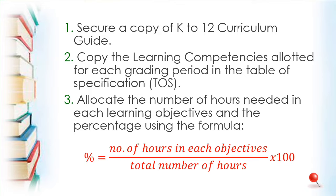Fourth, determine the number of items using the formula: number of items equals total number of items times percent. For learning competency number one with 50% and a total of 30 test items: 30 times 0.50 equals 15 — so the number of test items is 15. 30 times 0.17 is 5 — so learning competency number two has 5 items only. For learning competency number three: 30 times 0.33 is 10. That gives you your 30-item test.